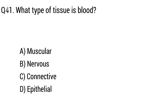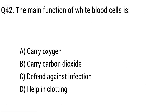Question 41: What type of tissue is blood? Option A: muscular, B: nervous, C: connective, D: epithelial. The right answer is option C, connective tissue.